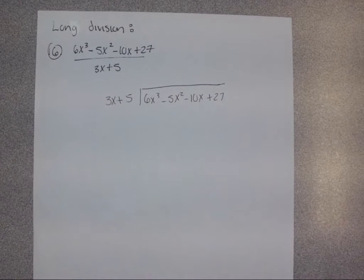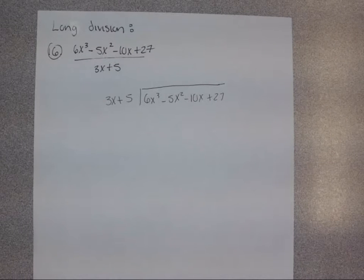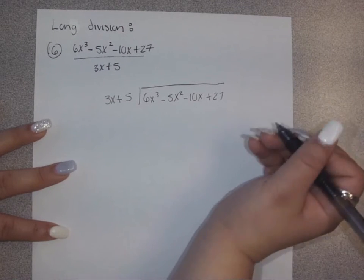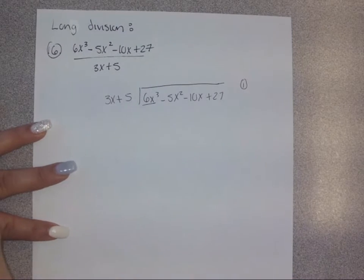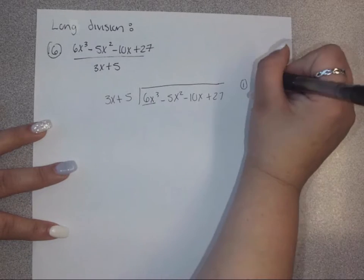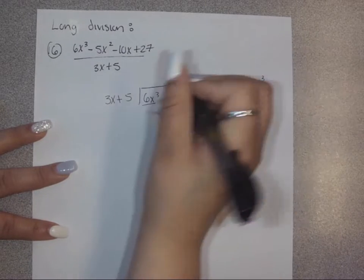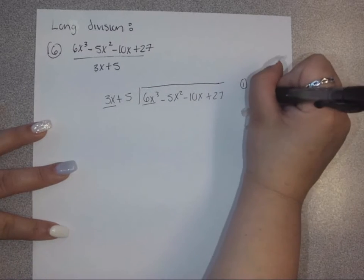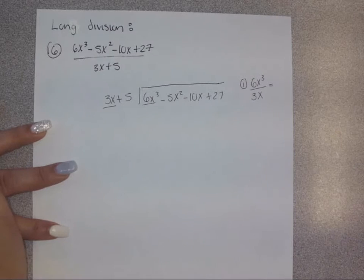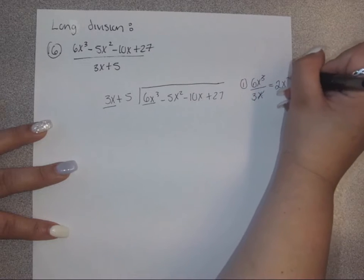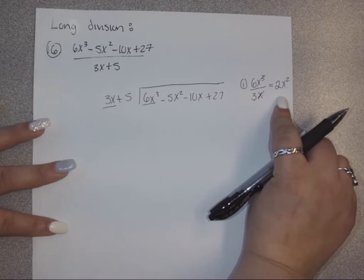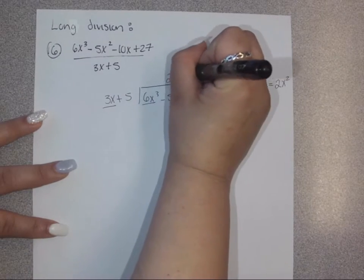Long division of polynomials is exactly the same as long division with numbers. If you forget, you can go back and try a regular example and follow the same steps. The first step is to divide. You take the first term of your polynomial inside — our first term is 6x cubed — and divide it by the first term of your divisor, which is 3x. So 6 over 3 is 2, and x cubed over x leaves x squared. This gives us 2x squared, which goes up in our quotient.